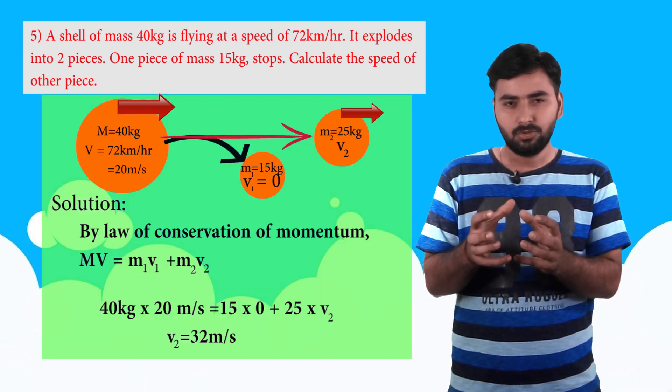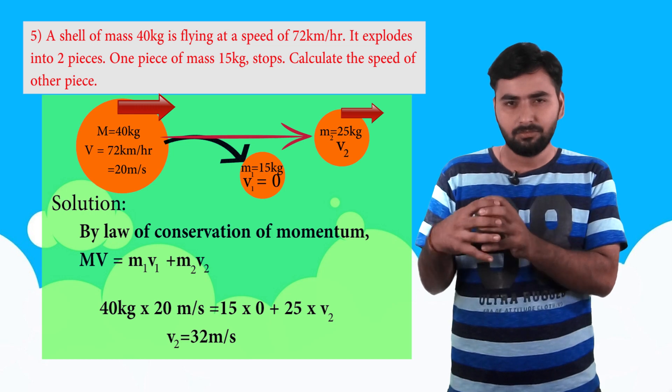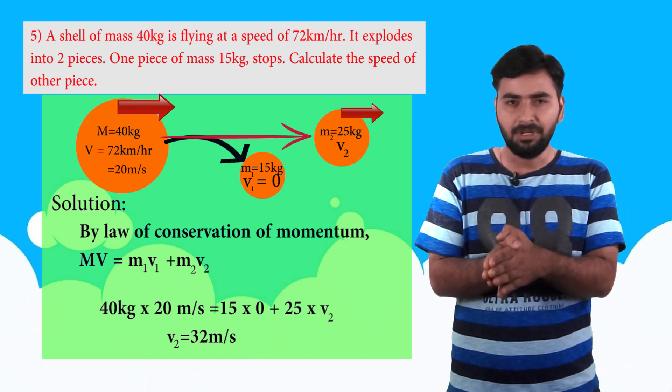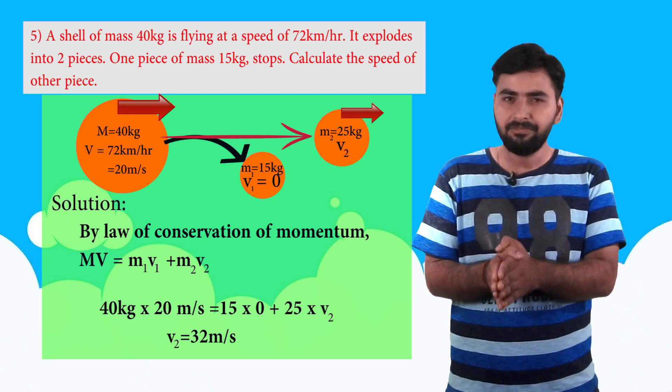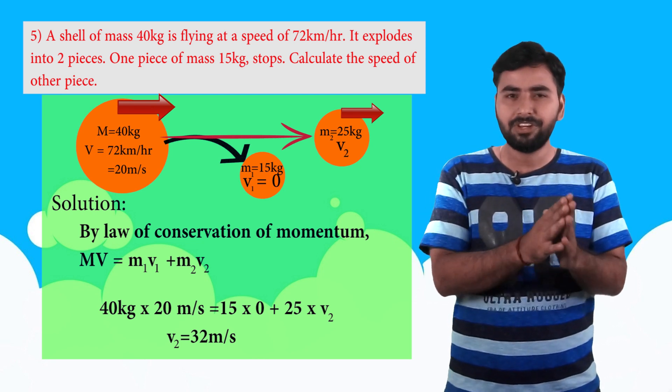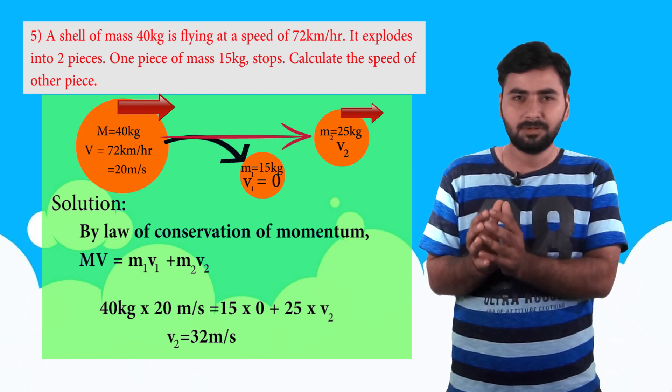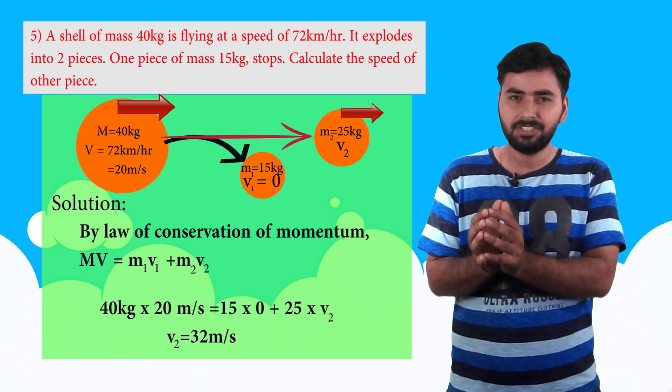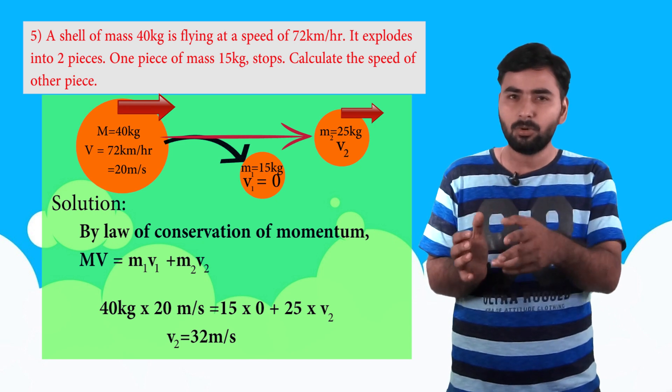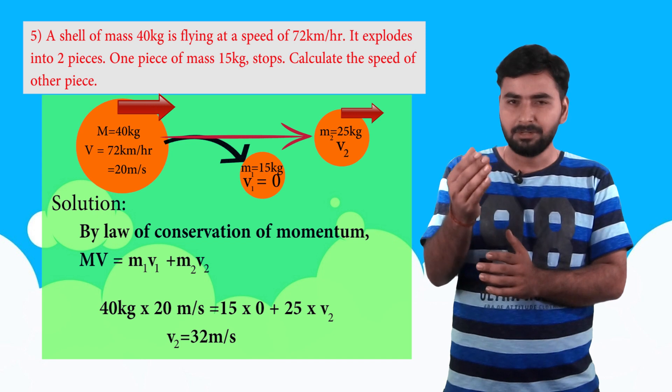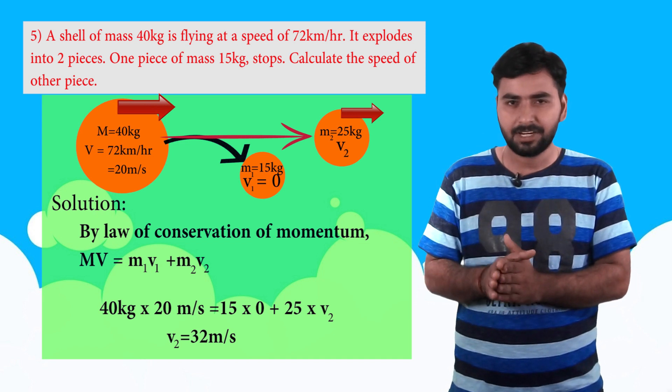So here initially it was one piece, the body, and later it broke into 2 pieces. So we can write the formula as MV is equal to M1 V1 plus M2 V2. Now here m, the total system's mass, is initially 40 kg, and its velocity is 72 km per hour, which can be written as, we need to convert to SI units, multiply by 5 by 18 to get meter per second, which comes to 20 meter per second.